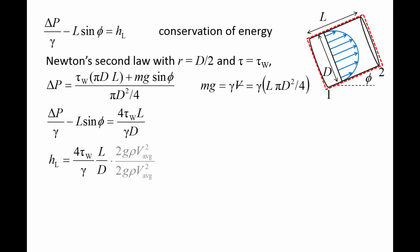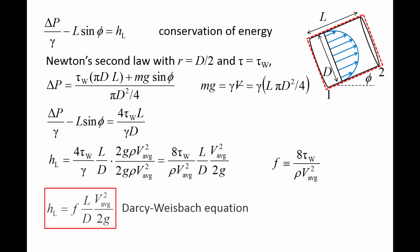We can develop a more useful form of the equation by multiplying the numerator and denominator by 2g rho v squared. Rearranging the variables, we have 8 tau w over rho v squared times L over d times v squared over 2g. We will define the first term, 8 tau w over rho v squared, as the friction factor f. We now have the Darcy-Weisbach equation, which will allow us to calculate the head loss for straight pipes for both laminar and turbulent flows. In a future video, we will discuss how to obtain f, which is often called the Darcy friction factor.